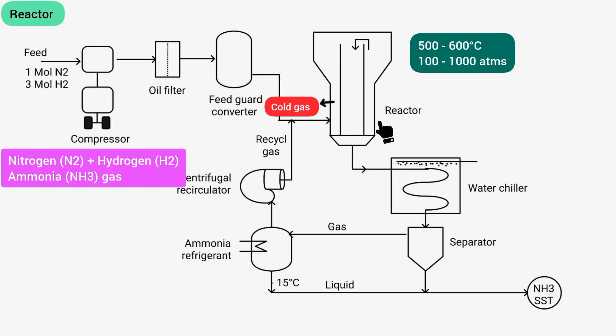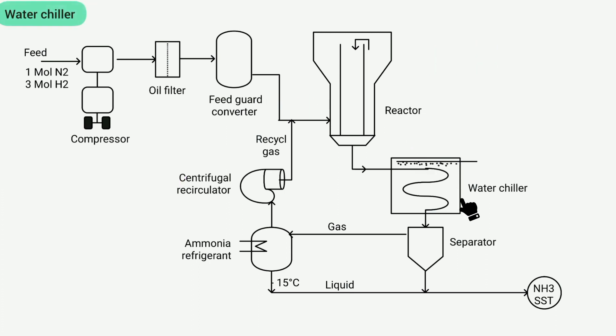This is called a water chiller which utilizes cooling water to condense ammonia gas into liquid ammonia. It is important to note that the water chiller does not achieve complete conversion of ammonia gas to liquid ammonia. Instead, it produces gaseous and liquid forms of ammonia.